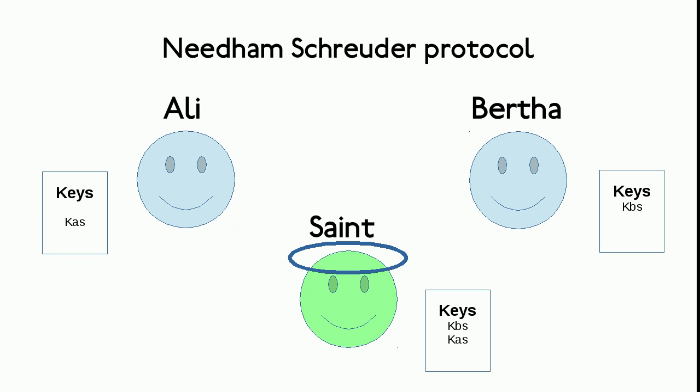But Ali doesn't have Bertha's secret key. However, Ali knows that Bertha and he both trust The Saint, and The Saint hence serves as a trusted third party.